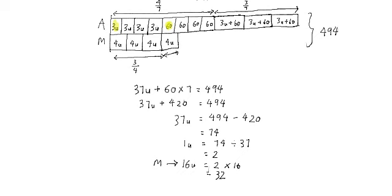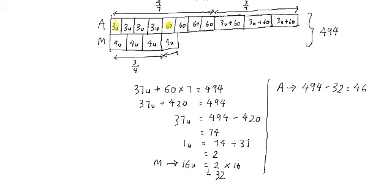Since there are 32 mangoes and the total is 494, to find the number of apples I subtract: 494 minus 32 equals 462. So there were 462 apples at the fruit store.